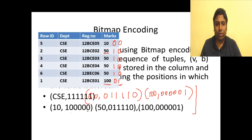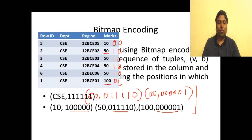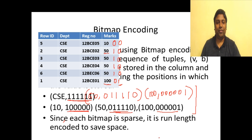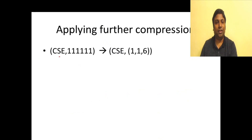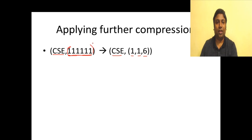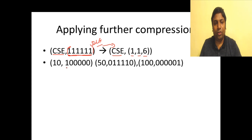Looking at a bitmap like 1 0 0 0 0 0 or 0 1 1 1 1 0, we notice repeating zeros and ones. We can compress even this further by applying run-length encoding on top of bitmap encoding. Each bitmap is run-length encoded to save additional space. For 'CSE', the bitmap is all ones: 1 starts at position one and repeats six times, giving: CSE, 1, 1, 6.